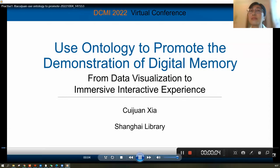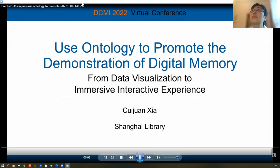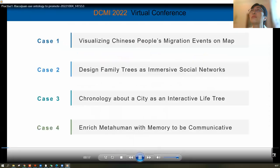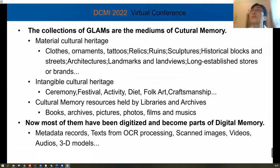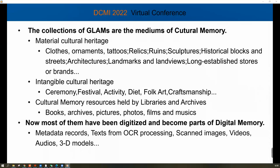Hello everyone, I'm Xia Cui Jun from Shanghai Library. It's a pleasure to share about using ontology to promote the demonstration of digital memory. There are four cases I want to share. According to the social memory theory, the variety of collections of GLAMs are the mediums of cultural memory, which can be used to support culture and historical research, and also to tell stories about the culture and history of a person, a community, or a city. Now most of them have been digitized and become parts of digital memory. The way to tell stories with digital memory resources in multimedia is brand new.